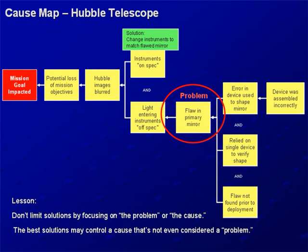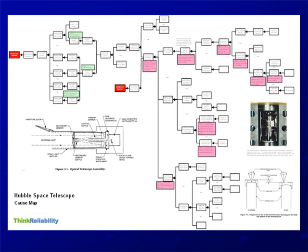In this Hubble example, there was a thorough investigation — it was part of what was called the Allen Commission — and there's a much more detailed cause map that we've made. We've got specific evidence in the magenta boxes, the impact of the goals for the mission and also the quality defect, and then the specific solutions are in the green boxes. It lays out quite a bit more detail about the null corrector and a schematic of the Hubble and the specific error in the device. There's a lot more information, and this information is on our website about the Hubble in more detail.